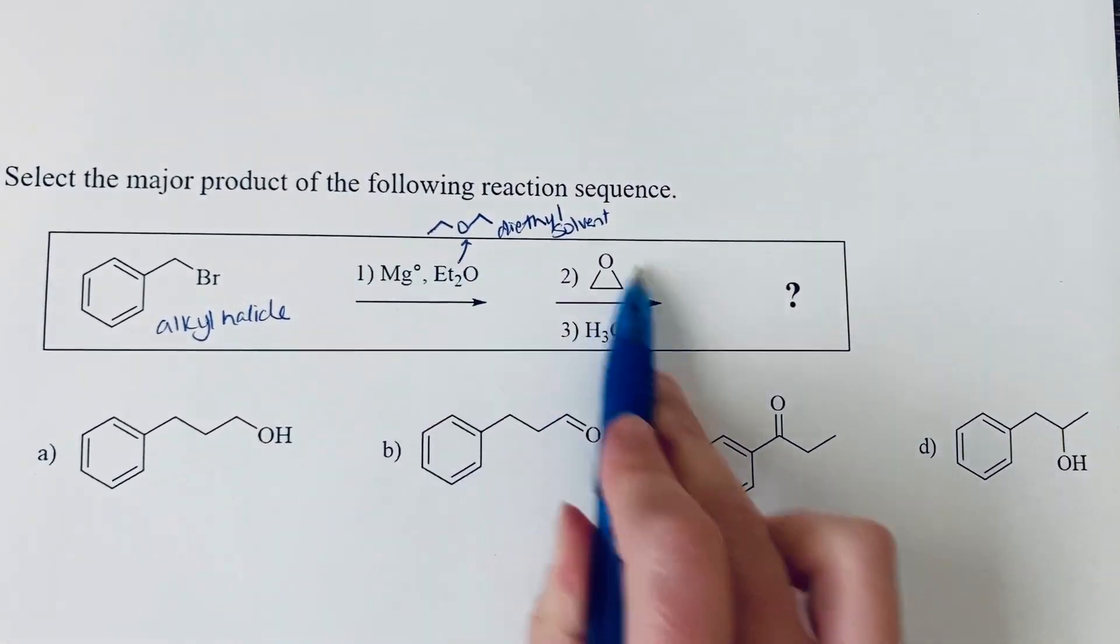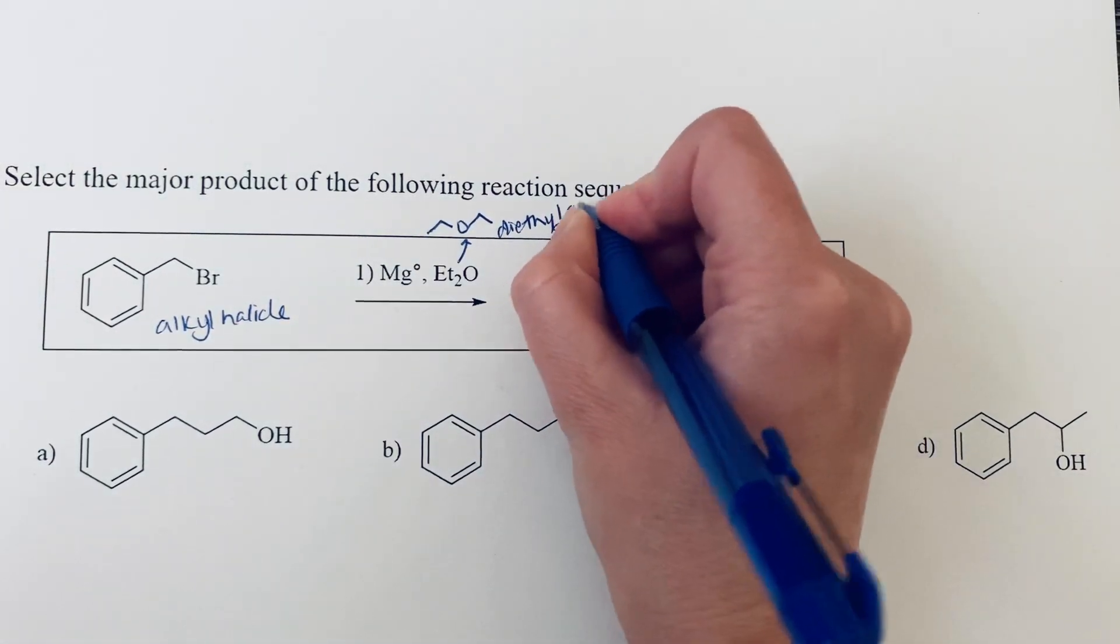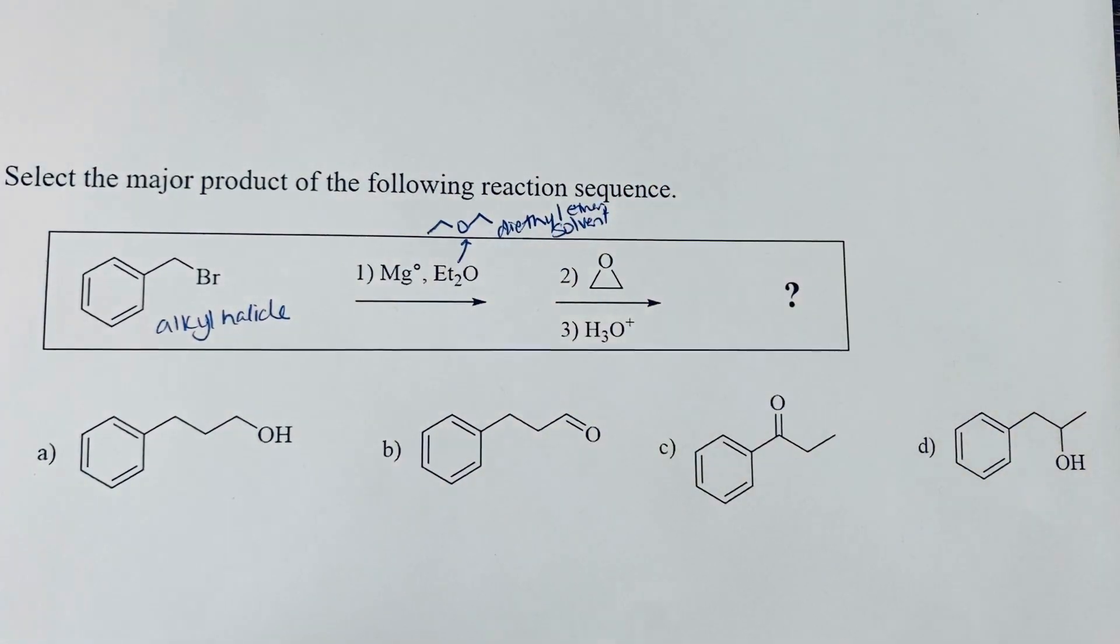So ethers that are not these cyclic three-membered rings, epoxides that we see in step two, are not reactive, so they make very good solvents. So diethyl ether is the solvent in the reaction.